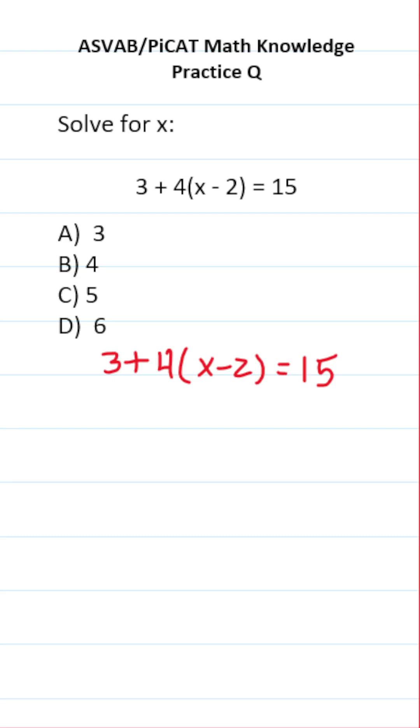This ASVAB/PICAT Math Knowledge practice test question says solve for x. We have 3 plus 4 times x minus 2 equals 15. In other words, we're going to be solving this equation for x.